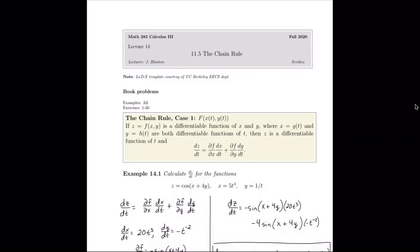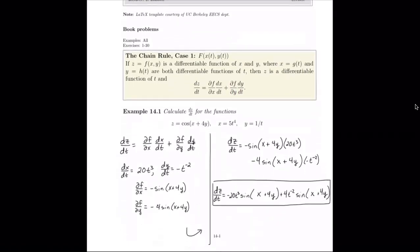The proof of this uses the linearization equation from section 11.4 with tangent planes. We don't really need to get into the details; the book provides a nice breakdown of the proof if desired. But let's just see how to work with this. We're asked to calculate dz/dt for z equals cosine of (x + 4y), where x equals 5t⁴ and y equals 1/t. We'll need dx/dt, dy/dt, and the partials of f with respect to x and y.